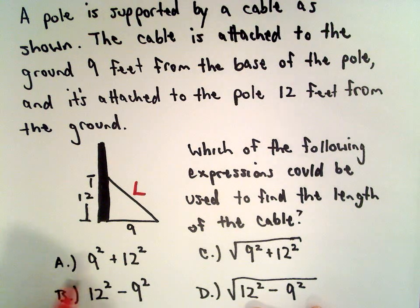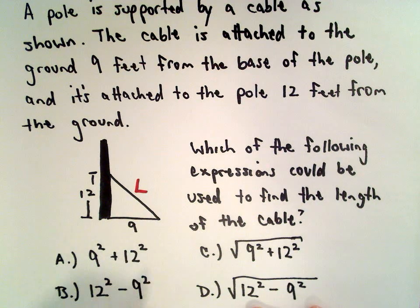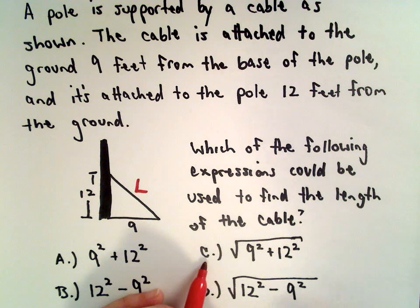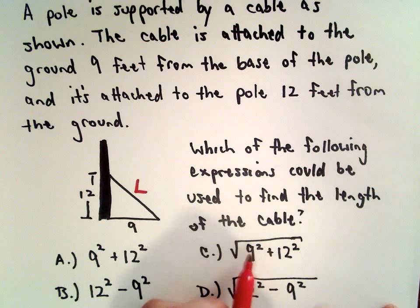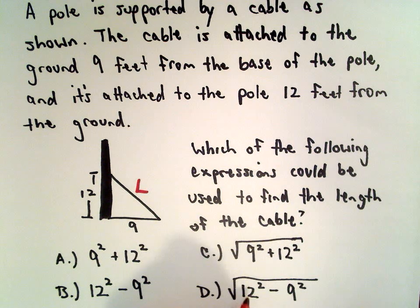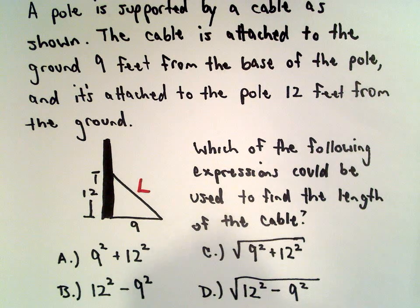Part A says it would be 9 squared plus 12 squared. B says 12 squared minus 9 squared. Answer choice C, we take the square root of 9 squared plus 12 squared. Answer choice D says we use the square root of 12 squared minus 9 squared.